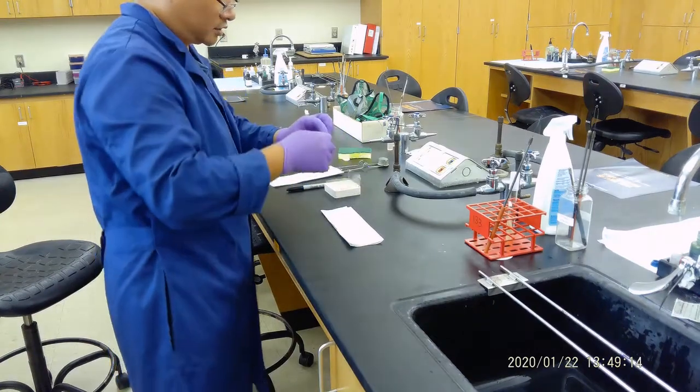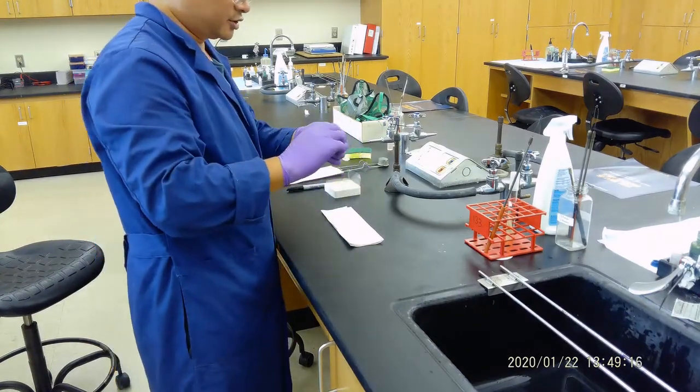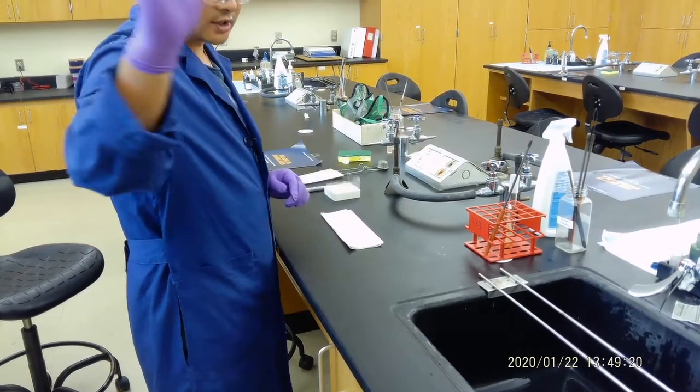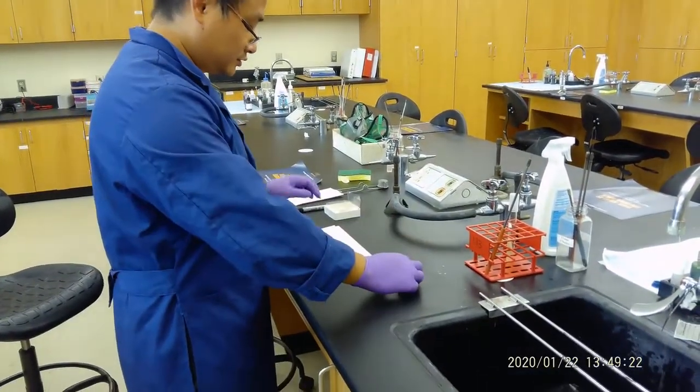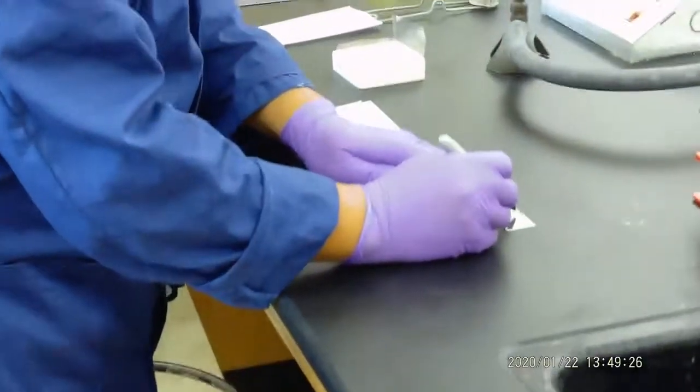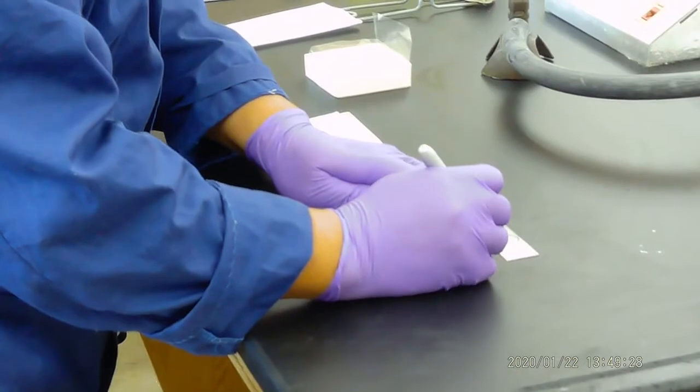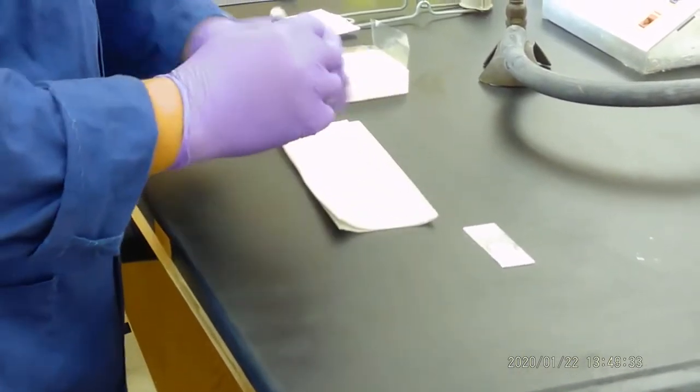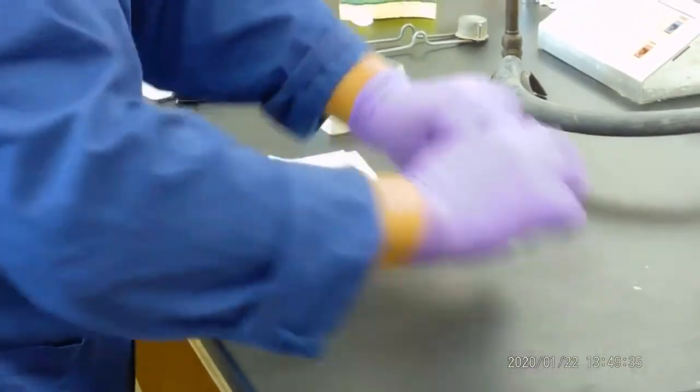Today we're going to do the simple stain for you. The first step is we're going to get glass slides. The second step we will do a label, always make sure you're labeled. So we draw a big circle and write SA on the side. This is our log slide.